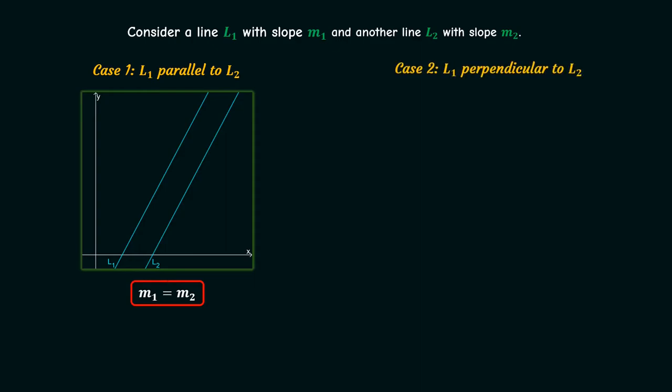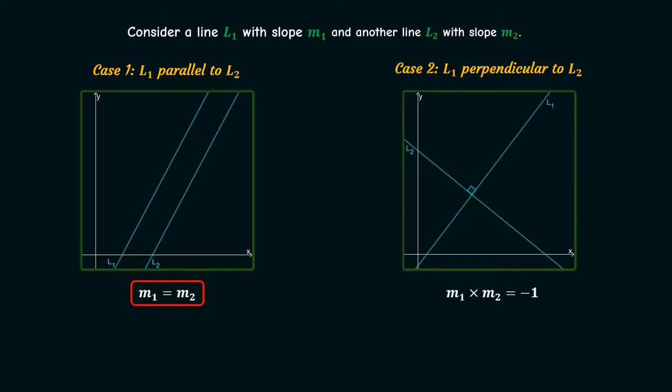The second case is that L1 is perpendicular to L2. In this case the product of the slopes will be equal to minus 1, i.e., m1 times m2 equals minus 1.